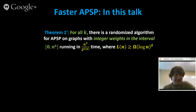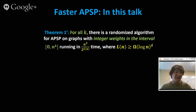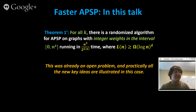Even having integer weights up to polynomial in n was already an open problem, and practically all the new key ideas are illustrated in this special case. There's a natural matrix product associated with APSP. By the Fisher-Meyer-Monroe theorem of 1971, to solve APSP it suffices to compute the min-plus matrix product of two n-by-n matrices. The i,j entry of the product is min_k (a_{ik} + b_{kj}), in contrast to the usual matrix product which is sum_k (a_{ik} · b_{kj}).